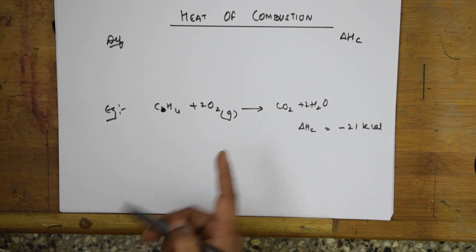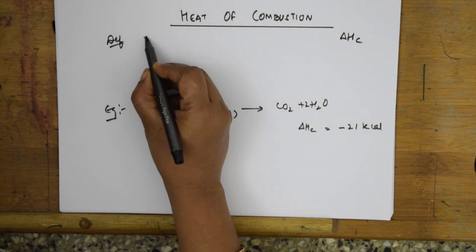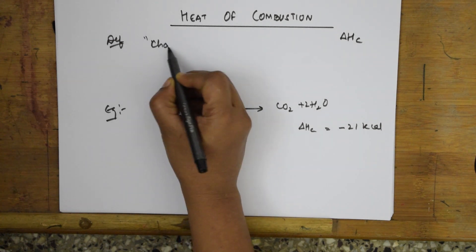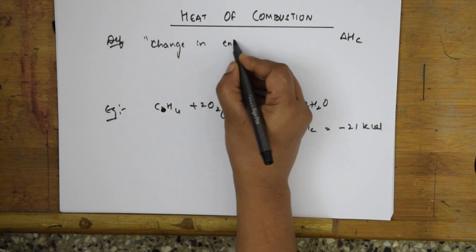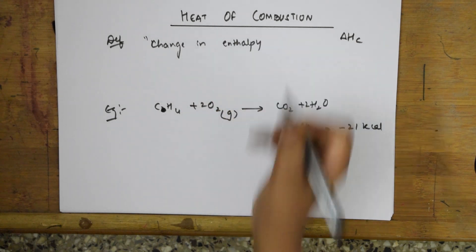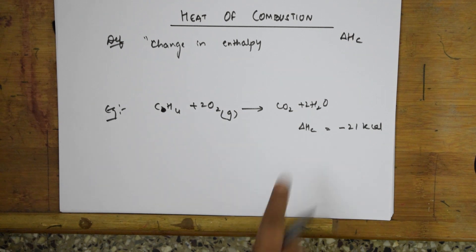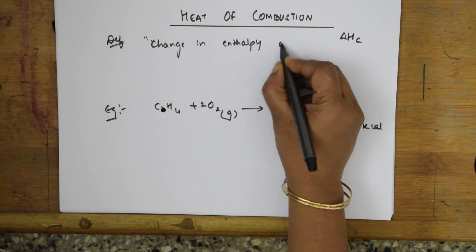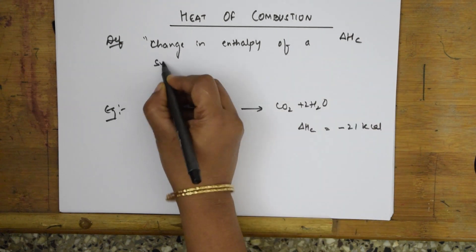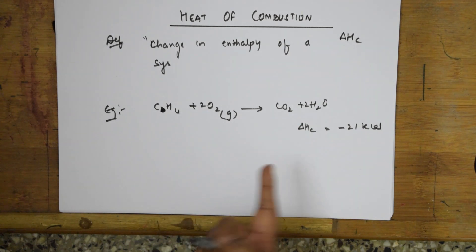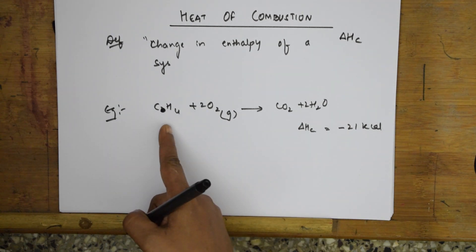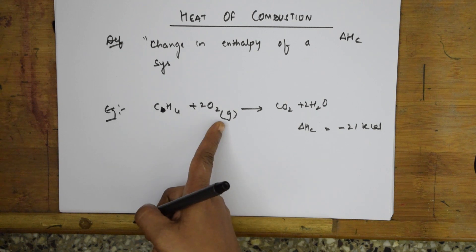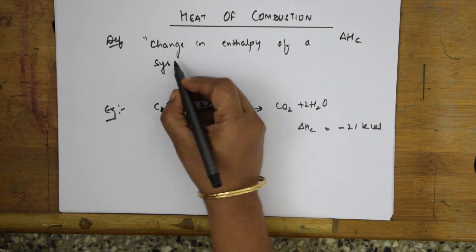Let us write the definition. It is a change in enthalpy, that is understood. When does this take place? It is a change in the enthalpy of a system. When one mole of a substance is completely burned in excess of air or oxygen.